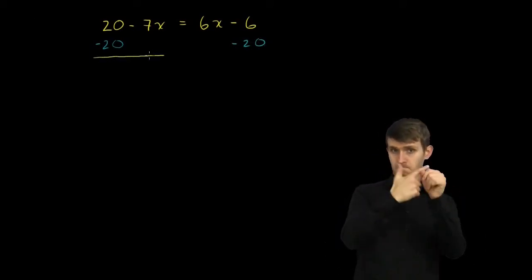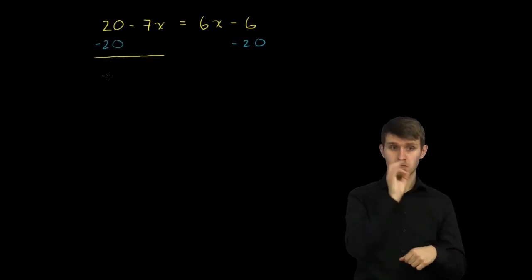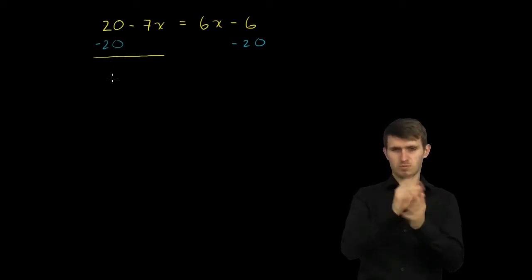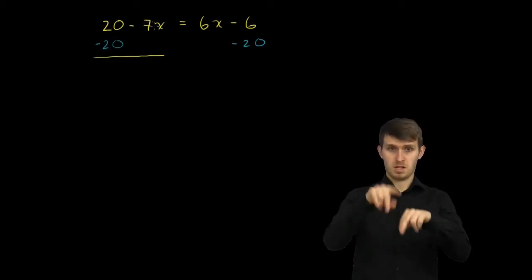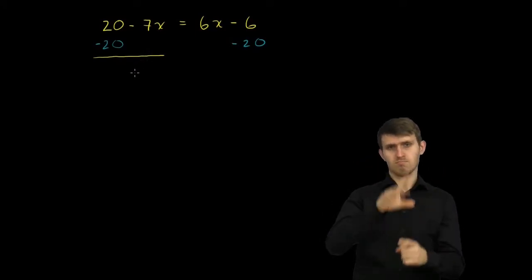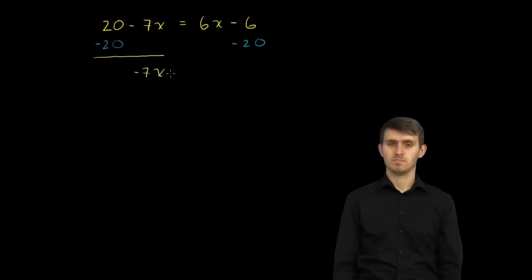The left-hand side of the equation, 20 minus 20 is just 0. That was the whole point. They cancel out. Don't have to write it down. And then I have a negative 7x, just gets carried down. Negative 7x.